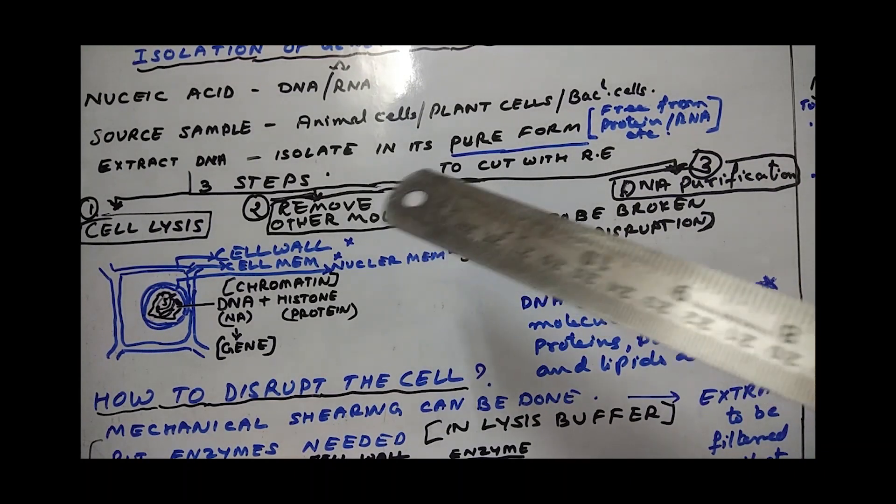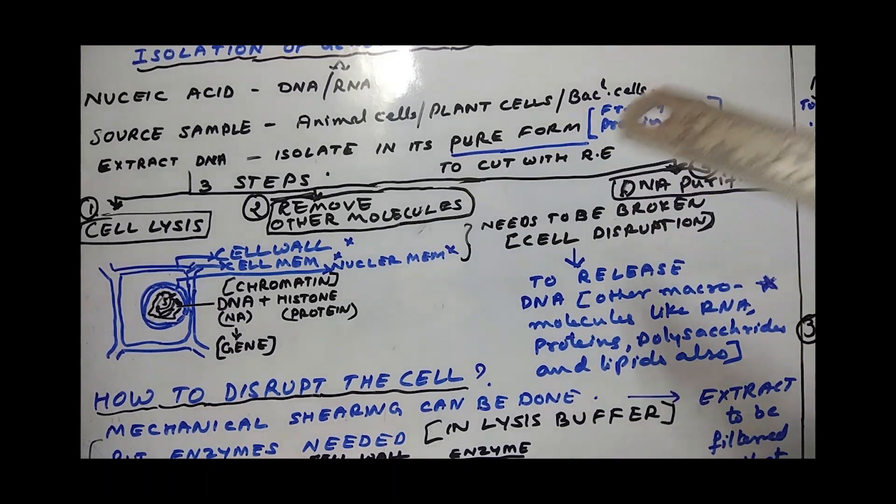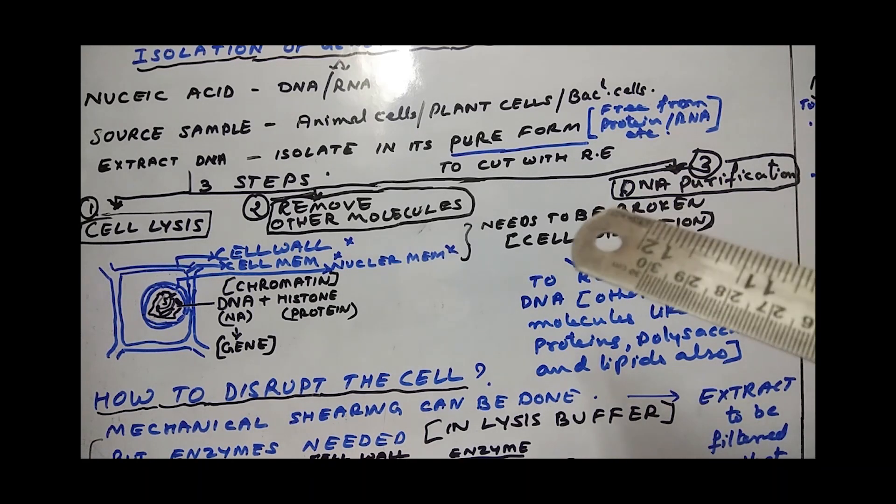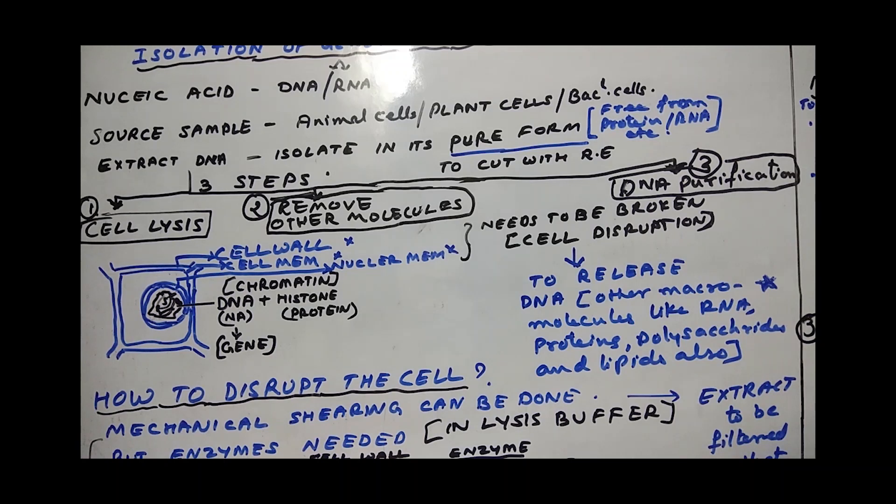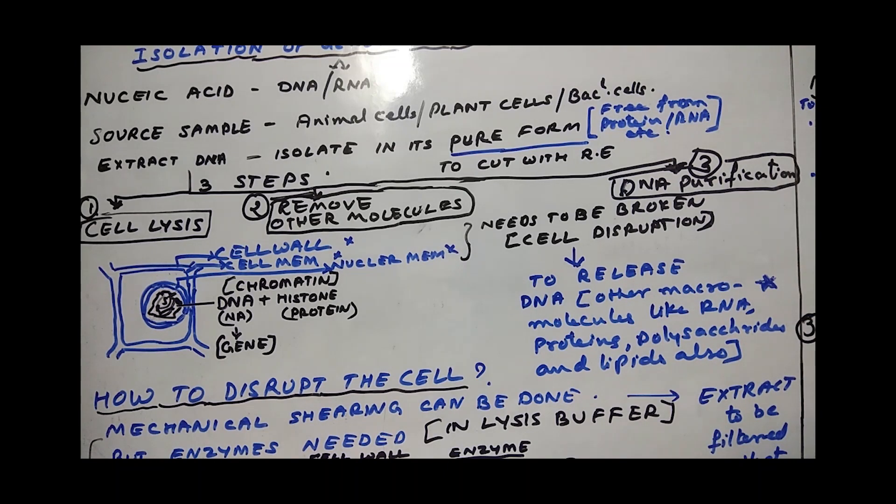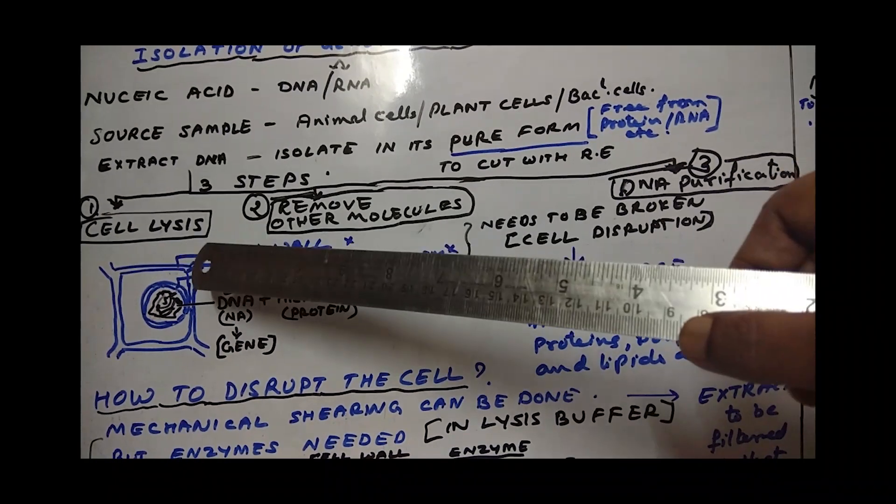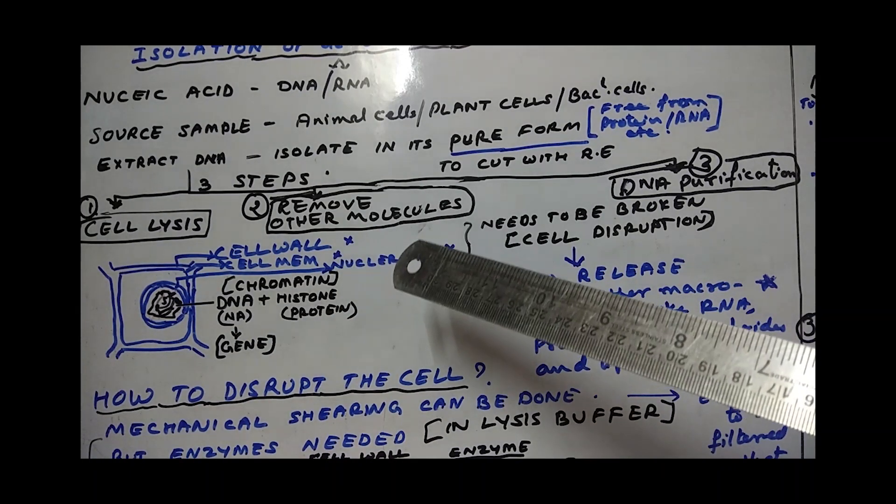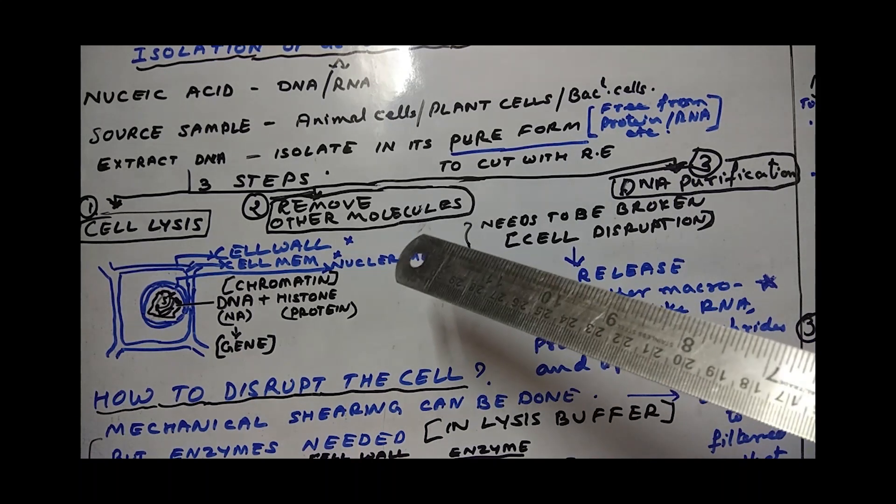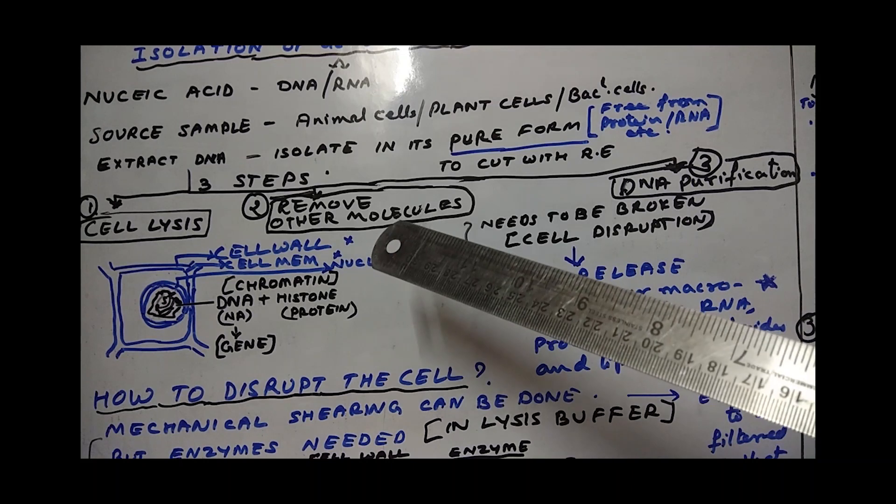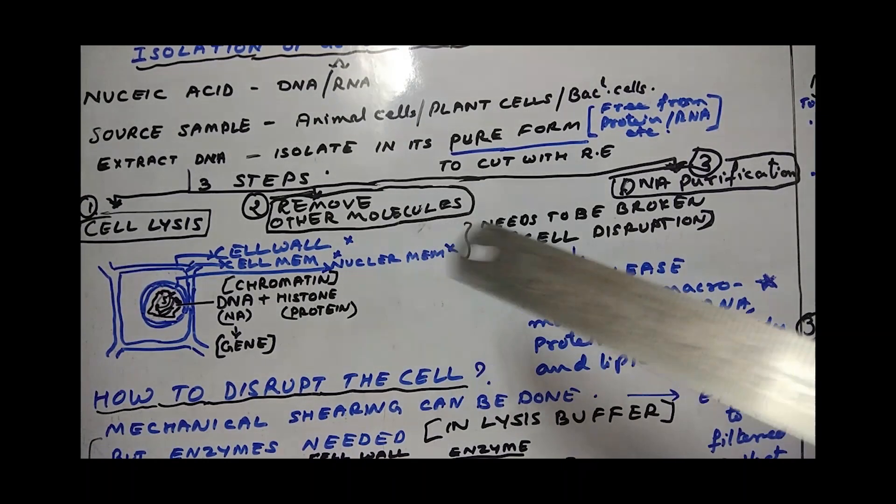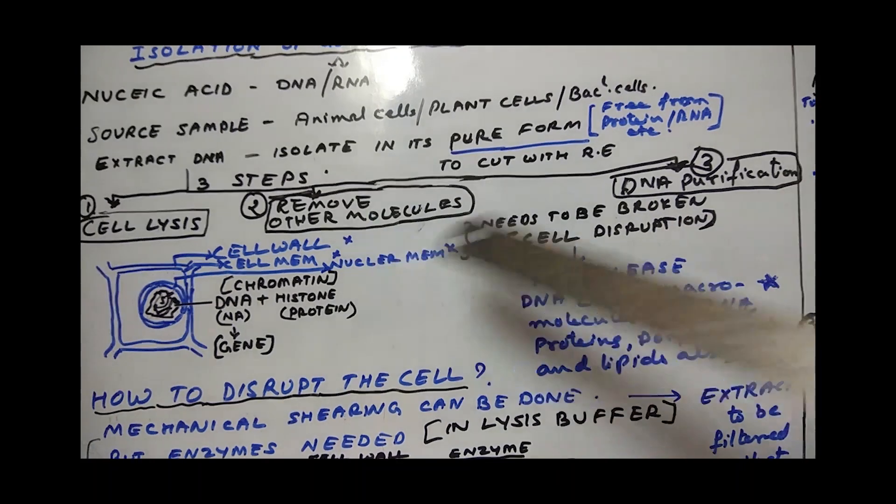To extract DNA, isolate it in its pure form - pure here refers to free from other macromolecules. The genetic material contains DNA plus histone, but we don't want histone, we want only the DNA. Basically three steps are there: cell lysis, remove other molecules like RNA, protein, lipids, carbohydrates, and then purify it to get pure DNA in its pure form.